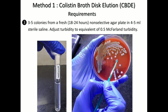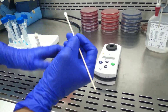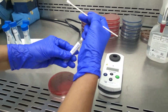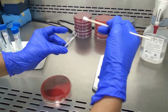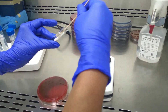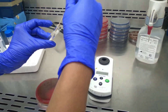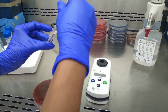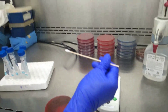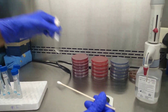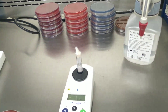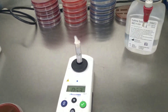This is how the inoculum is prepared. Take 3 to 5 colonies from a freshly subcultured isolate on a non-selective media. Emulsify in 4 to 5 ml of sterile saline, shake well to get a uniform turbidity, and adjust to a turbidity of 0.5 McFarland.